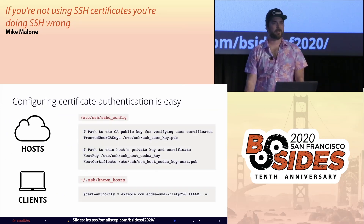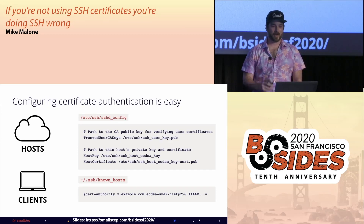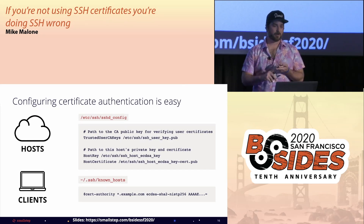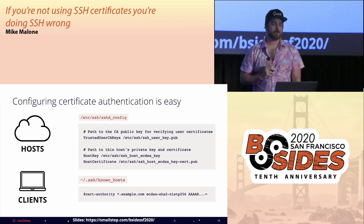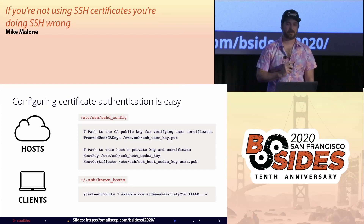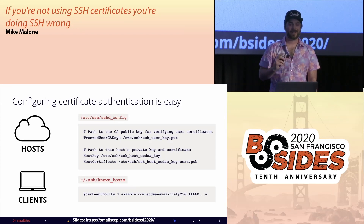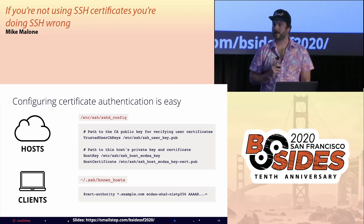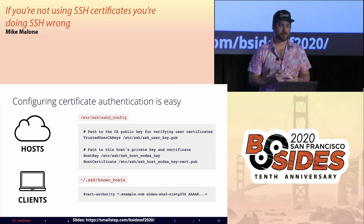Configuring OpenSSH to use certificates is easy. On each host, you edit sshd_config specifying the CA public key, the host's private key, and the host's certificate. On each client, you add one line to known_hosts specifying the CA public key. That's literally all you need to start using certificate authentication. You can even use it alongside public key authentication to make transitioning easier.